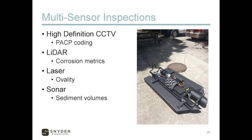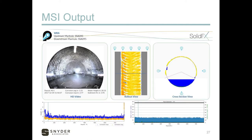The MSI platform collects LiDAR data for determining loss of pipe wall — if it's supposed to be a 78-inch pipe and it measures 82 inches, you know you've lost two inches of wall thickness. It has a laser for measuring ovality if there's any squashing of the pipe due to overburden. And it takes sonar data for everything below the water level, providing an estimate of sediment volumes, debris, and damages below the waterline. This output is very data-heavy and very handy for large-diameter sewers.